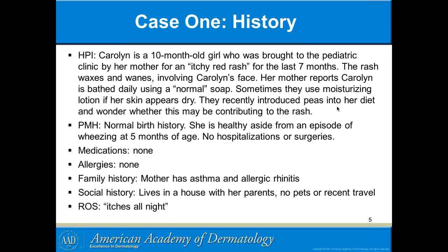They recently introduced peas into her diet and wonder whether this may be contributing to the rash. Dietary factors seldom play a big part. She has a normal birth history, and is healthy aside from an episode of wheezing at 5 months of age — she may be starting to develop a bit of asthma, or it might have just been viral. No medications, no known allergies.